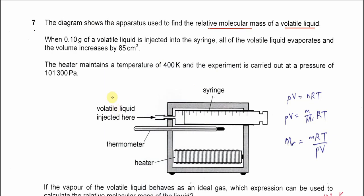First, 0.1 gram of the liquid is injected to the gas syringe and this liquid will vaporize and form gas. So the volume will increase here. In this question we're already told it's 85 cm³.